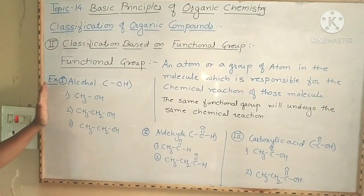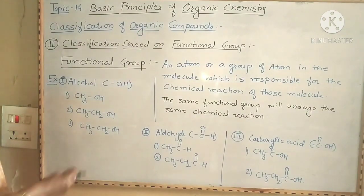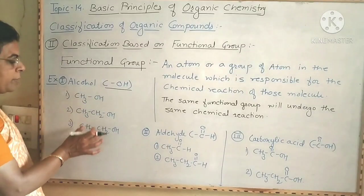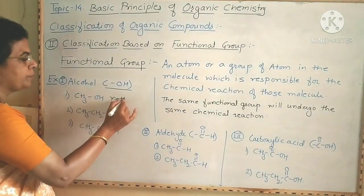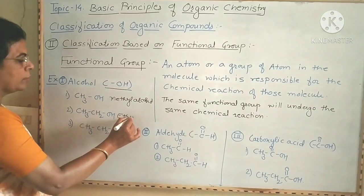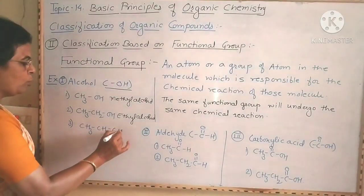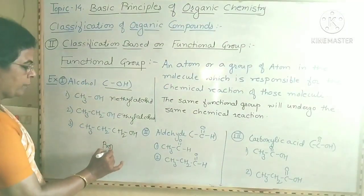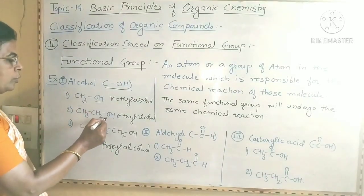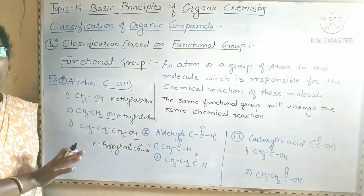For example, first we look at alcohol. The functional group of alcohol is the OH group, that is the hydroxy group. From this hydroxy functional group we can write examples of alcohols: CH3OH is methyl alcohol, CH3CH2OH is ethyl alcohol, and CH3CH2CH2OH is propyl alcohol or n-propyl alcohol. This OH group is the functional group of alcohol, and all these compounds undergo the same type of chemical reactions.